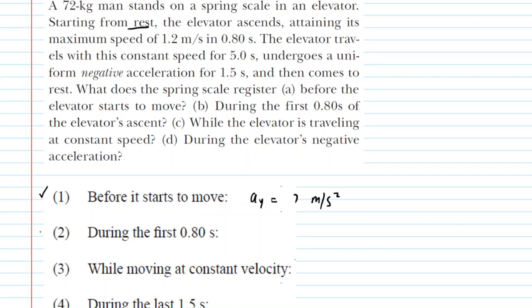We move on to part two of the problem and during that part the elevator accelerates from rest and reaches a maximum speed of 1.2 meters per second in 0.8 seconds. We can summarize the data as follows. The initial velocity of the elevator would be zero meters per second, the final velocity was stated as 1.2 meters per second, and then there is a time interval of 0.8 seconds.